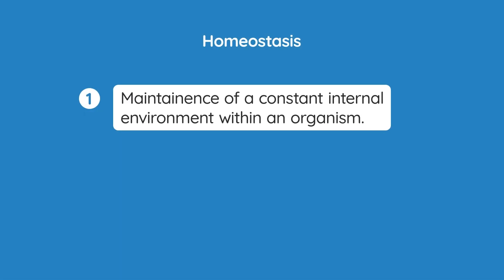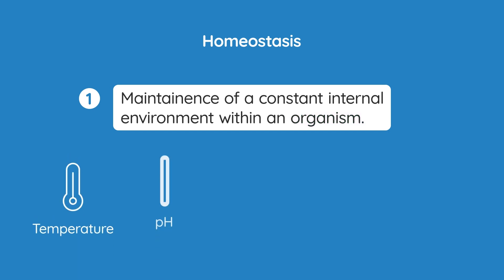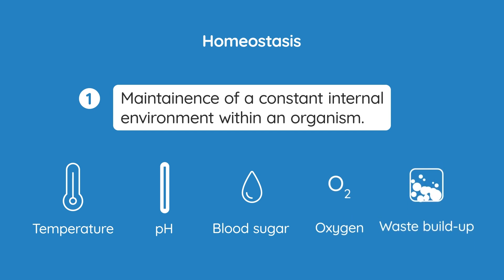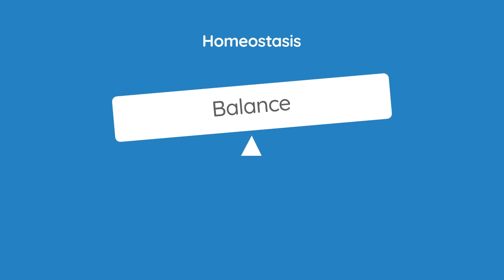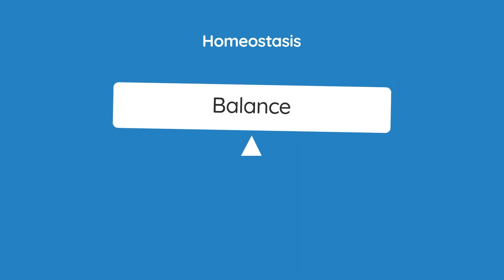The definition of homeostasis is that it is the maintenance of a constant internal environment within an organism. This means that organisms are always trying to keep factors like temperature, pH, blood sugars, oxygen levels and the amount of waste build up within narrow ranges. Homeostasis is about maintaining equilibrium or balance within the organism.